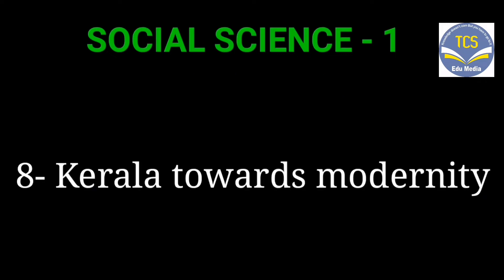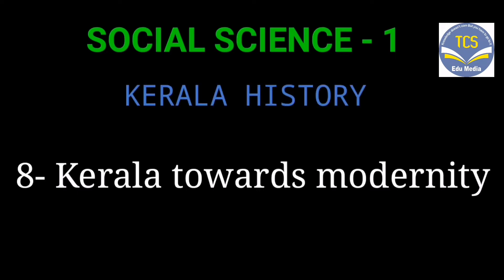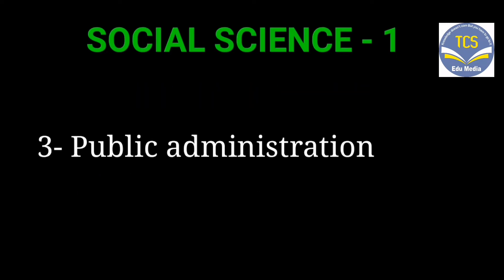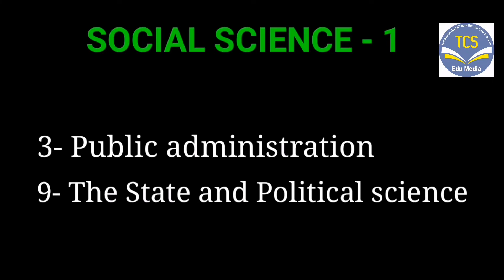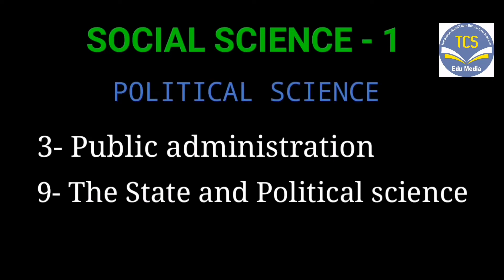The eighth chapter is 'Kerala Towards Modernity,' which is related to Kerala History. Chapter number 3 is 'Public Administration,' and Chapter number 9 is 'The State and Political Science.' These two chapters are related to Political Science.